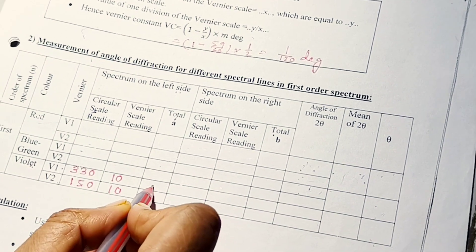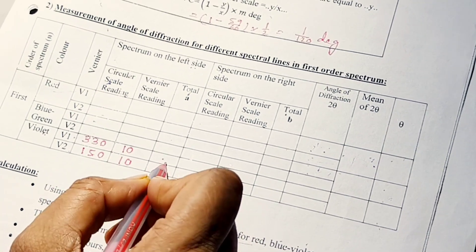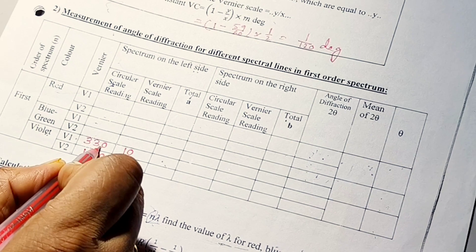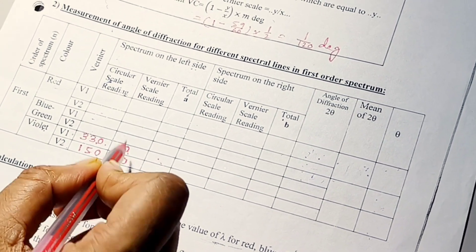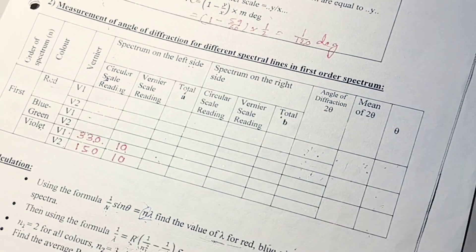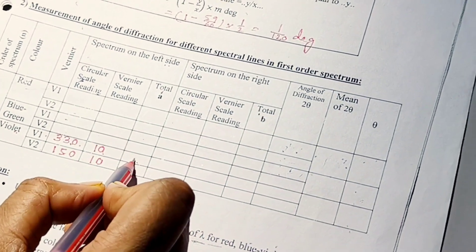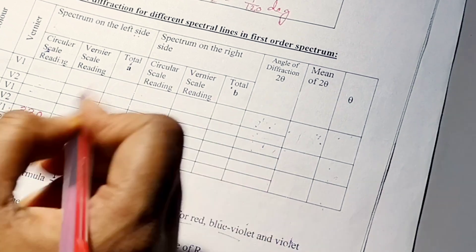So, what we have to do? We have to do total reading. How to do total reading? Total means this circular scale reading addition, this 10, that means Vernier scale reading, multiplied by Vernier constant, that will be our total reading. I will do the calculation later.